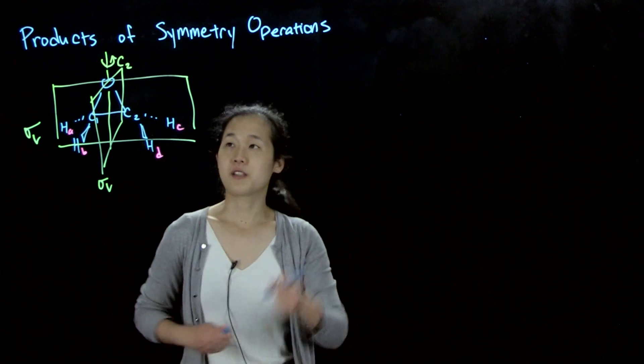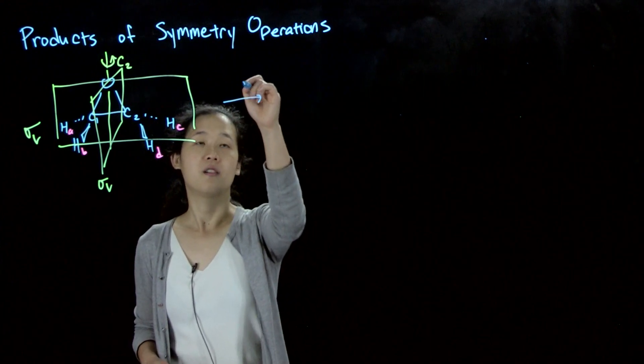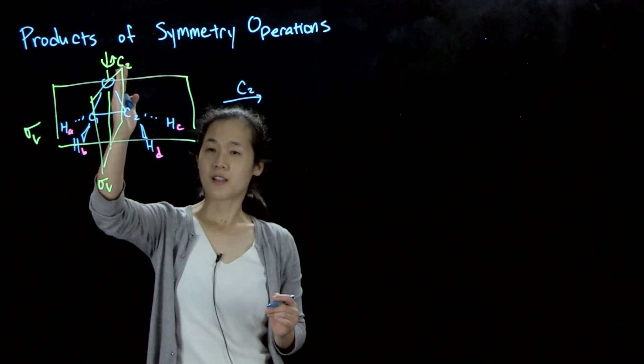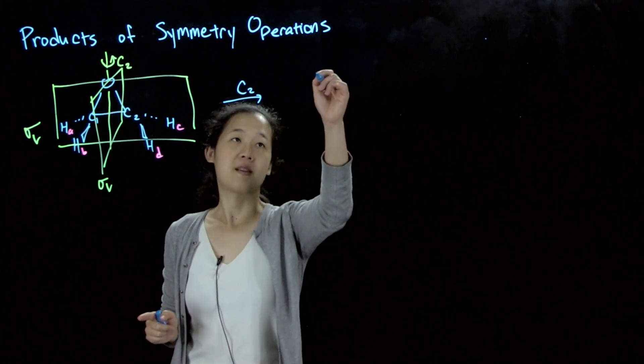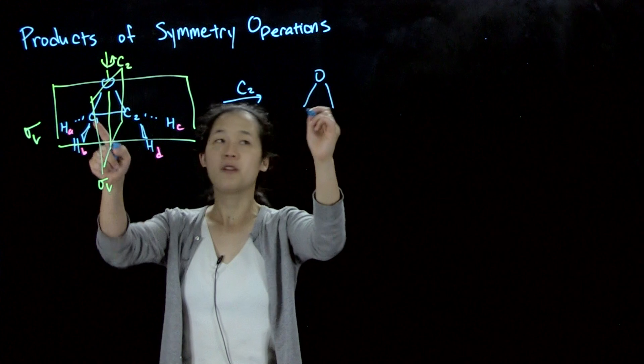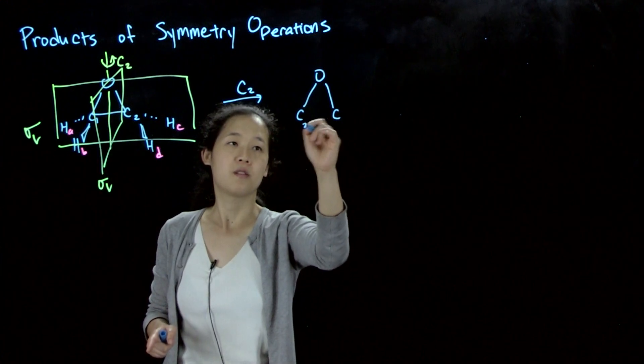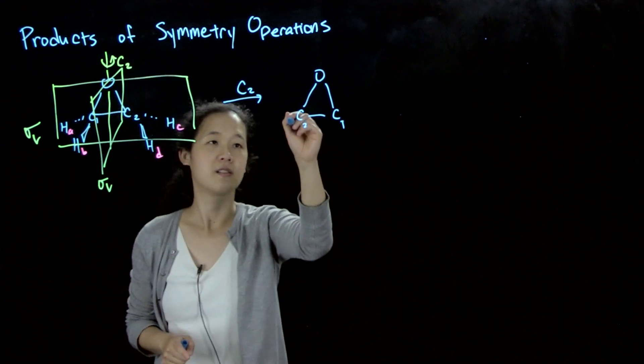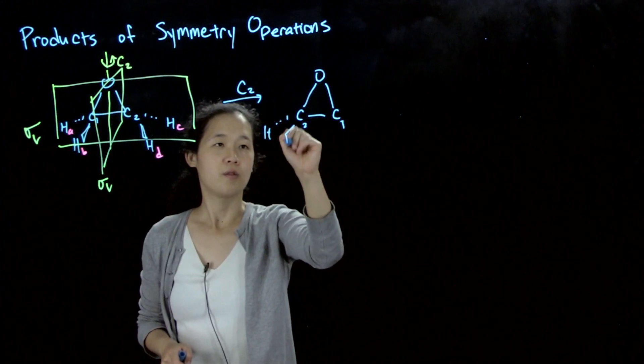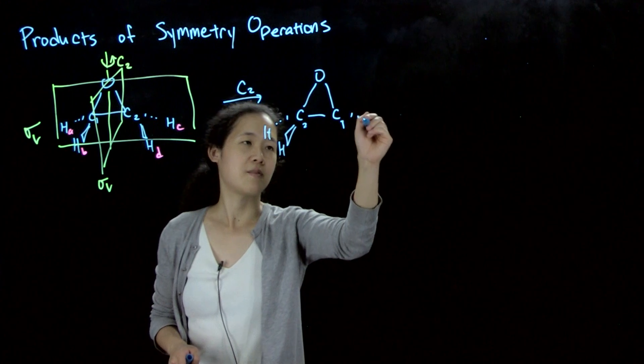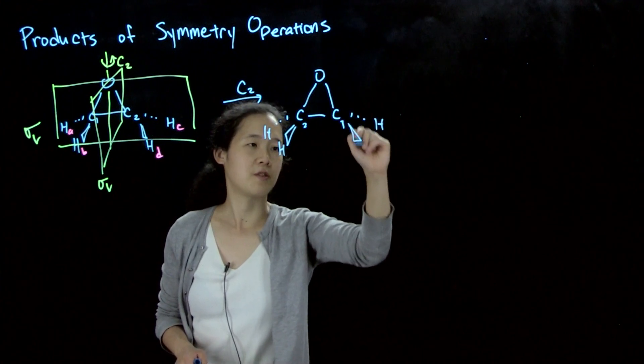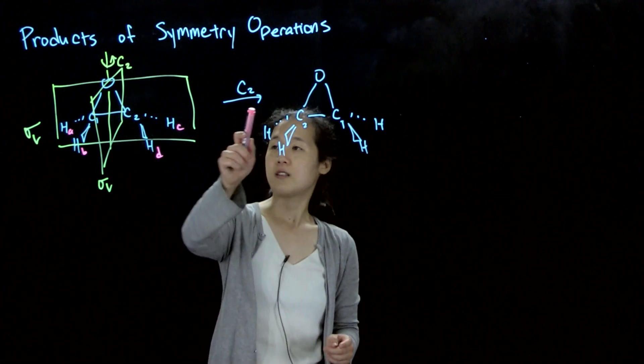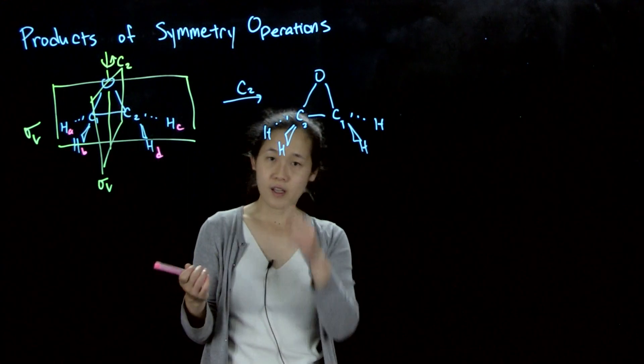So if we were to first do, for example, a C2, our new orientation, if we do the C2 about the central axis, the oxygen stays in the same place, but we flip carbon 1 and carbon 2. So we're rotating around here. No matter what, we can just draw our atoms. They should be identical. Just the label of them will change. So if we do this C2 rotation, suppose we're going counterclockwise.